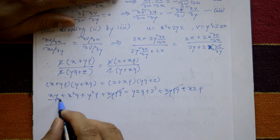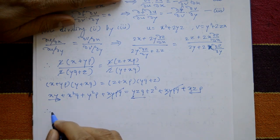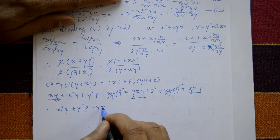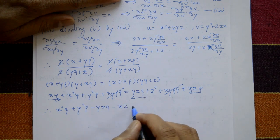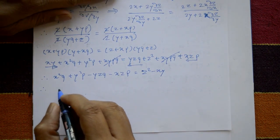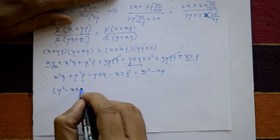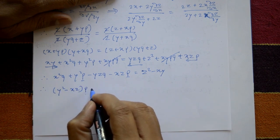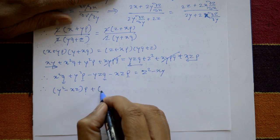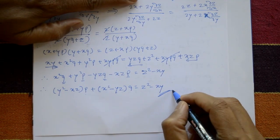Shifting terms: x²q and y²p remain on the left; subtract yzq and xzp. On the right, z² − xy remains. Therefore taking p common: (y² − xz)p, and taking q common: (x² − yz)q = z² − xy. This is the required result.